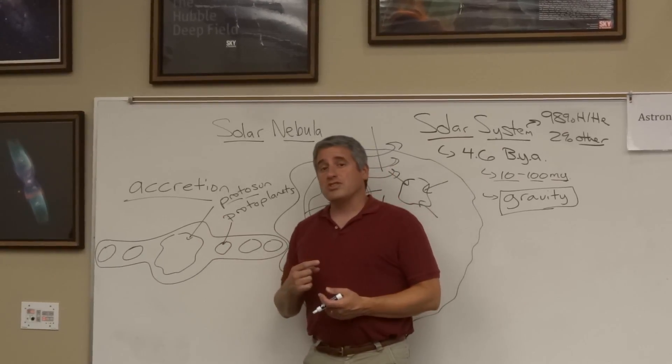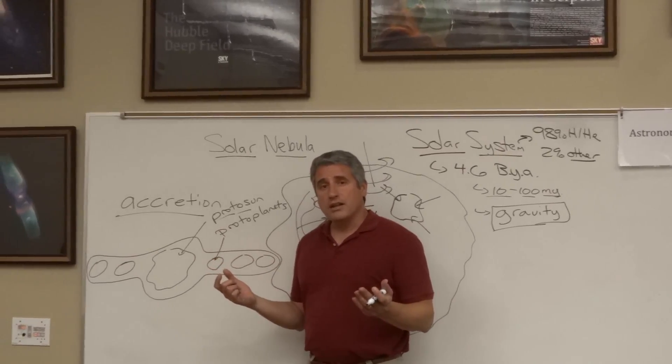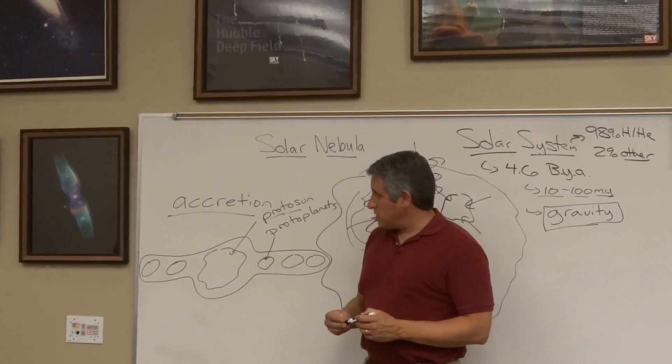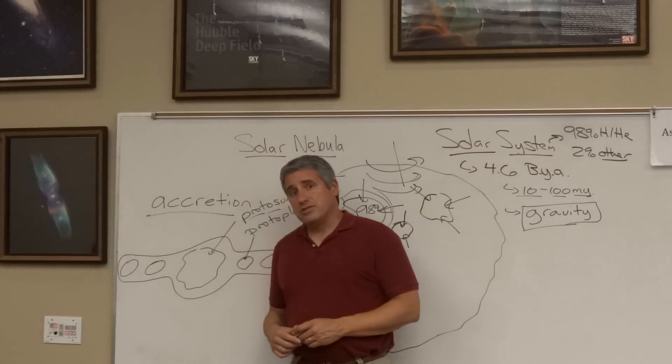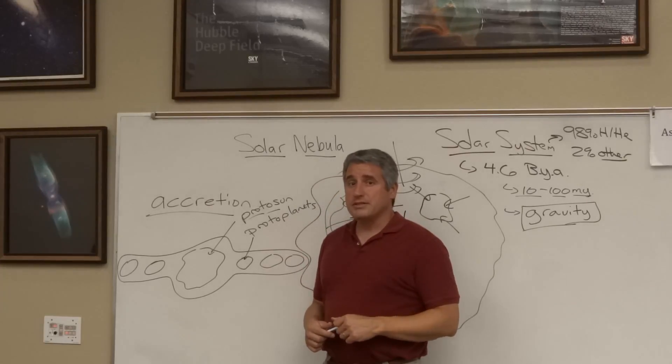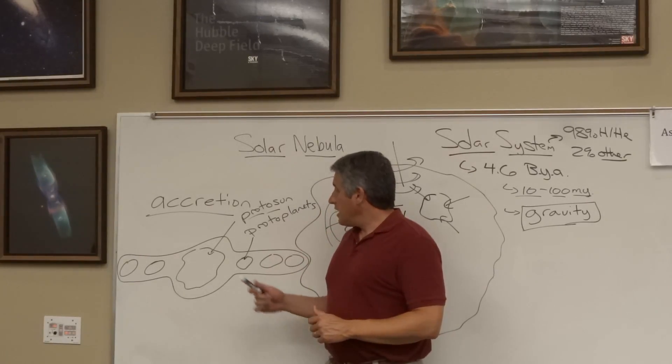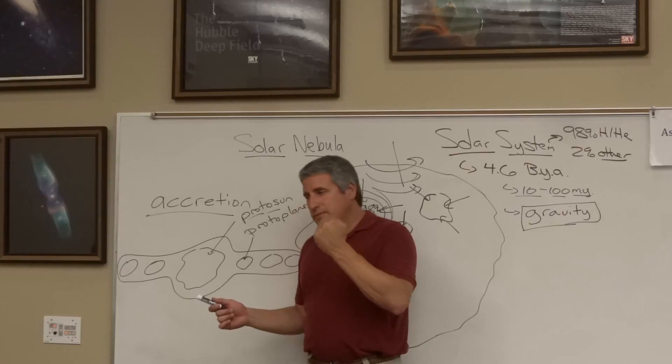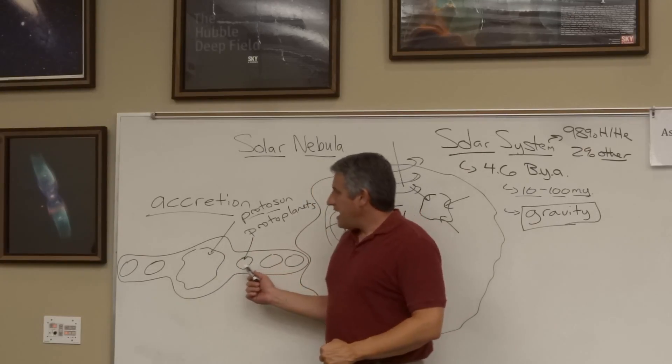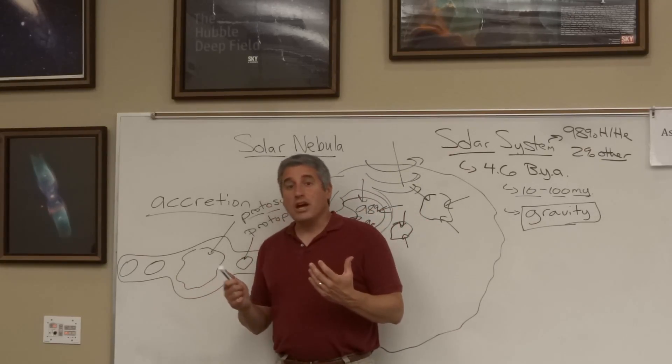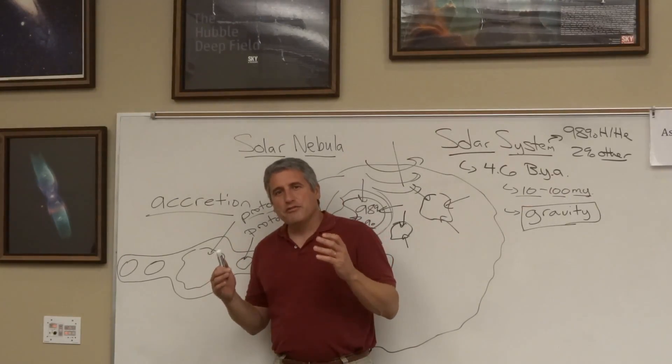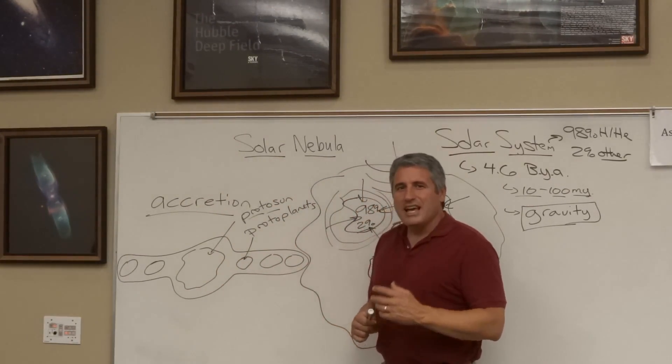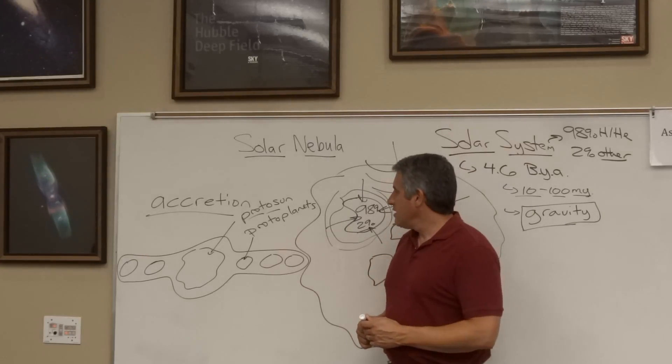Could there be more than one star? Sure, why not? In fact, as we'll see later in the term, two star systems, binary star systems, are more common than single star systems. In our system, one giant clump forming the proto-sun and eight, nine, ten, depending on how you mark it, proto-planets forming out of that disc as a result of many, many collisions.